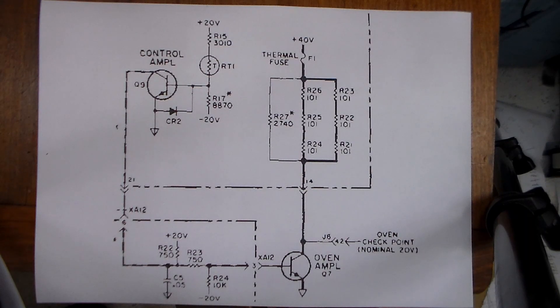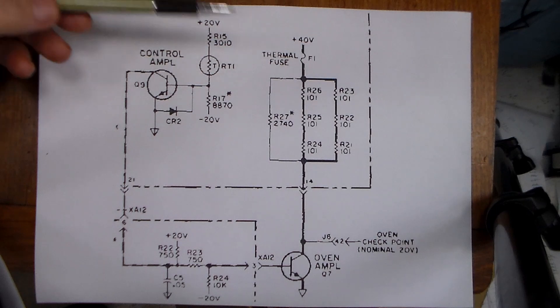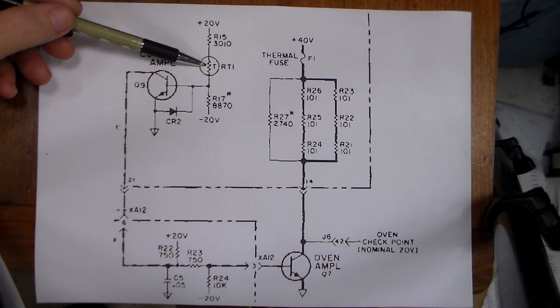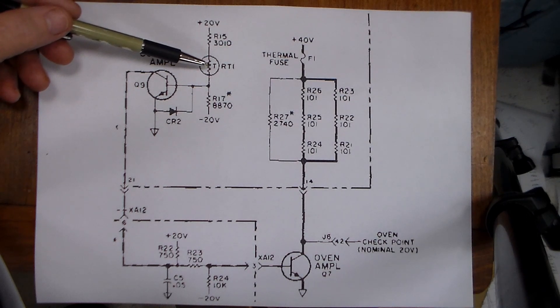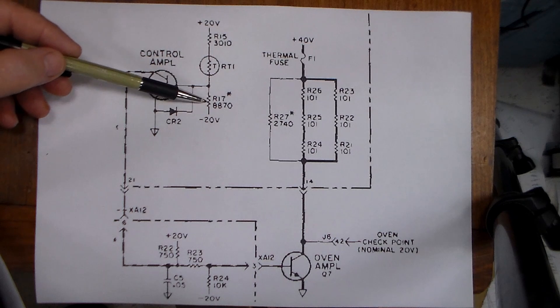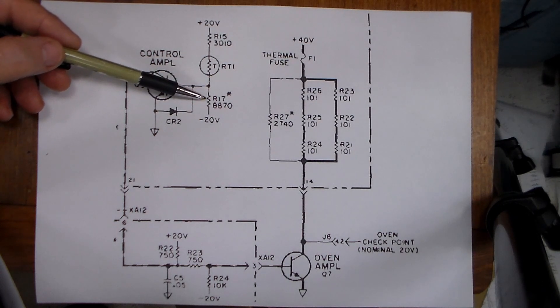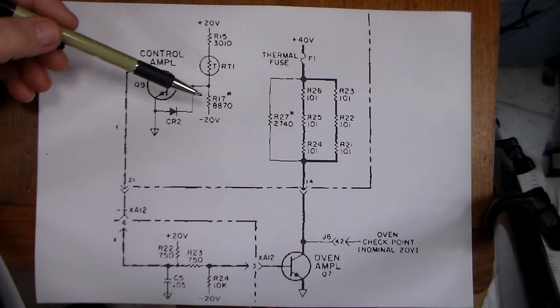This is the circuit schematic of the oven controller used in the HP 3300A. It's quite a simple schematic. What we have is the thermistor here, which senses the temperature within the oven. We have R17, which sets the temperature set point that the controller works at.